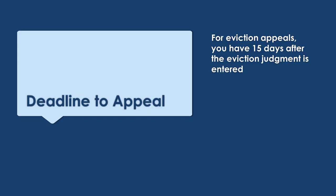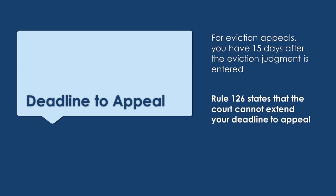Opinions issued by the Court of Appeals are public records and will be available on the Minnesota Judicial Branch's website, so people may be able to find the opinion and see the reasons you were evicted. Eviction cases have a very short deadline to appeal — you have 15 days from the date that the District Court Administrator entered a judgment on the eviction order to file and serve your appeal. It is important to figure out your deadline as soon as possible because Rule 126 says the court can't extend your deadline to appeal.